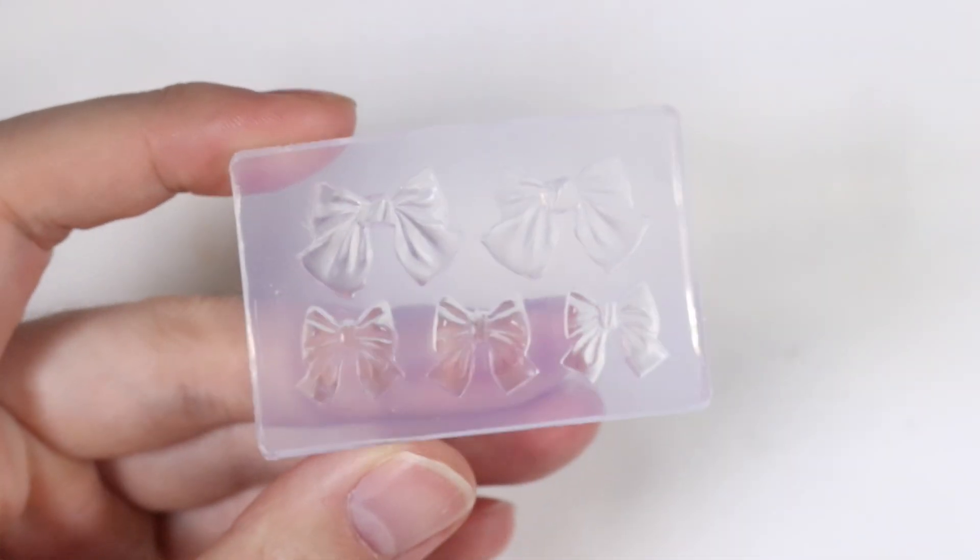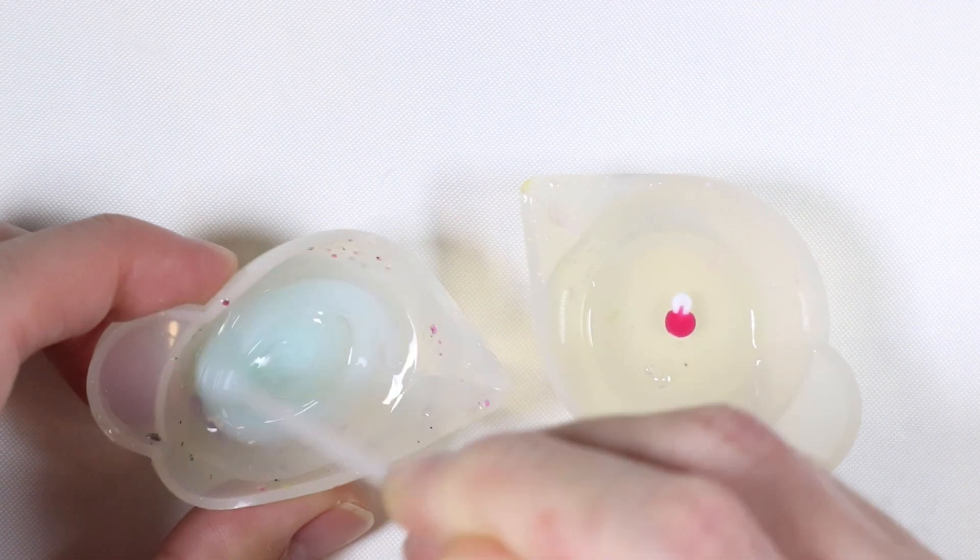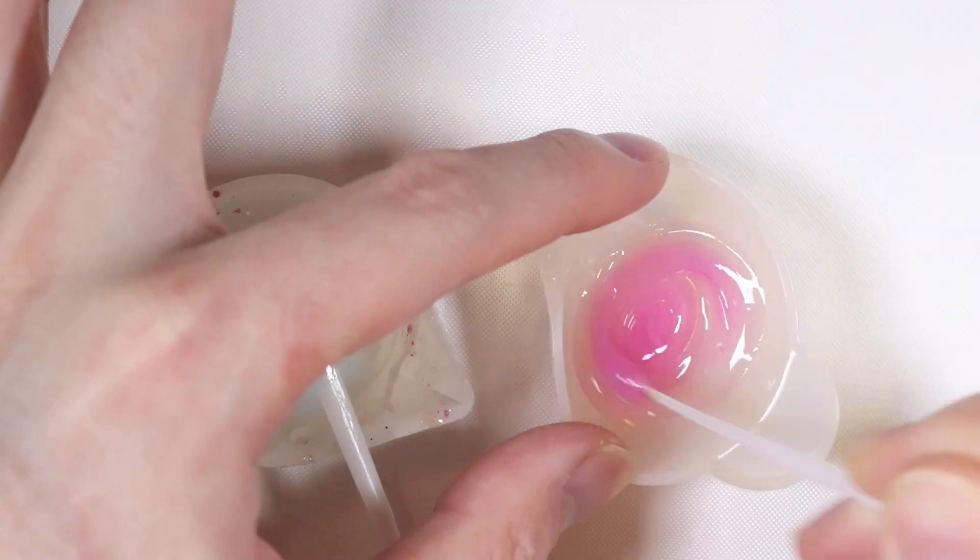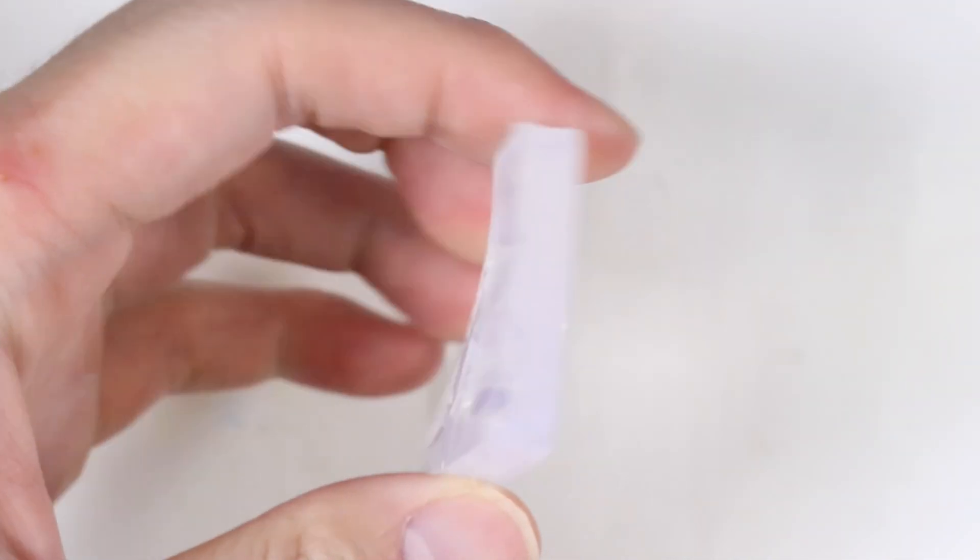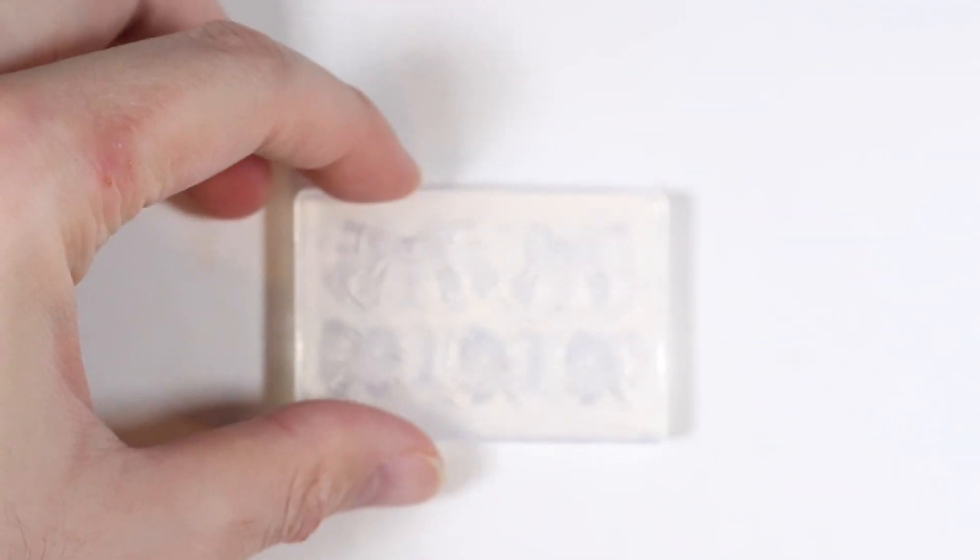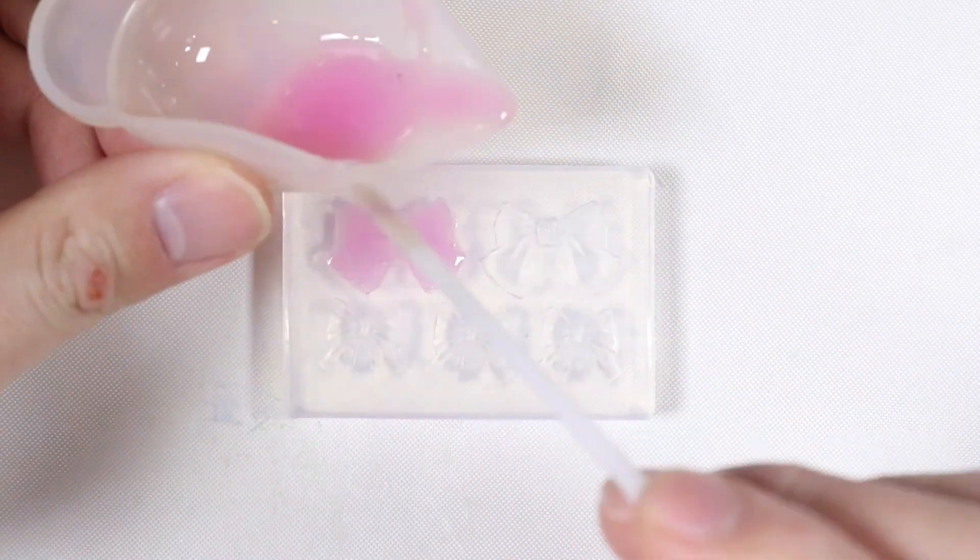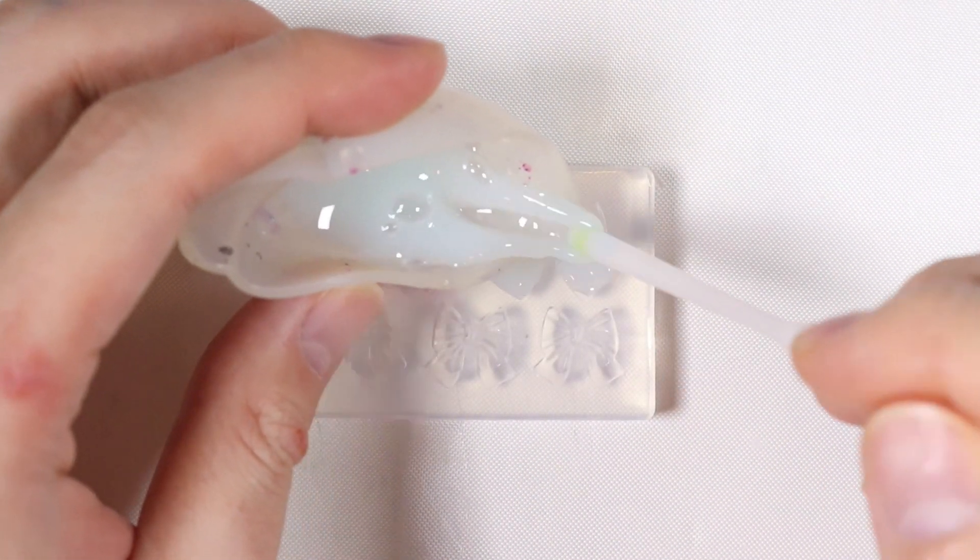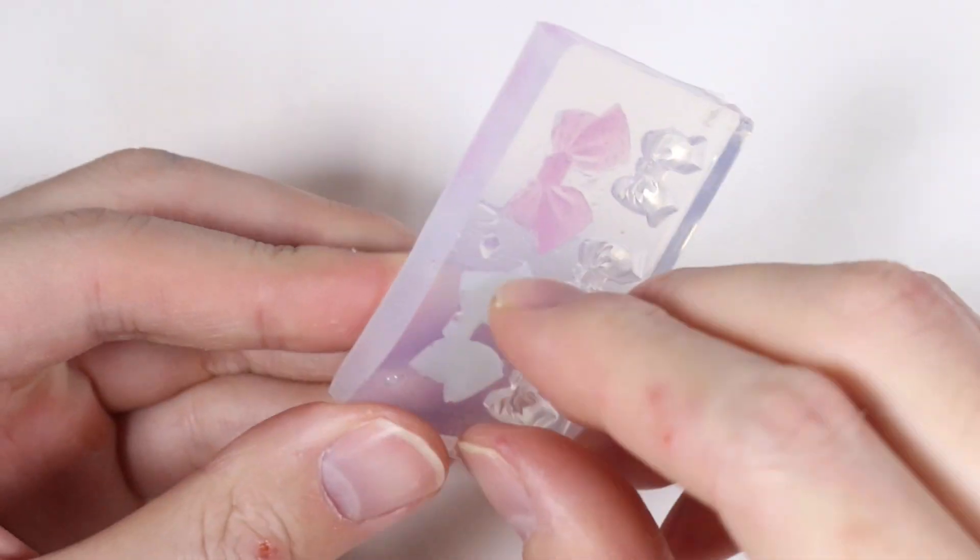And next we're going to add a little ribbon. So we're going to add some pigments and make like a mint ribbon and a pink ribbon and place that into our ribbon mold. And you have to be really careful because there can be a lot of bubbles if you're using UV resin or any resin. And once it's fully cured, we're going to take it out of the mold.